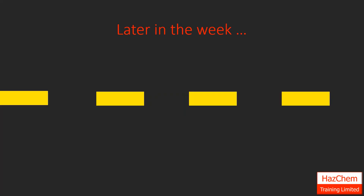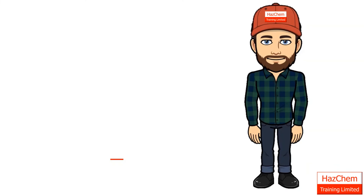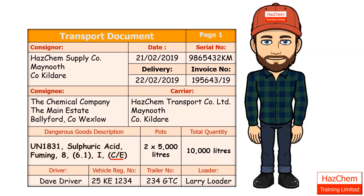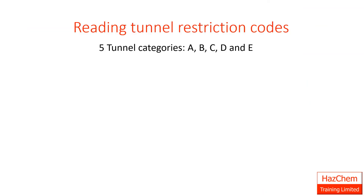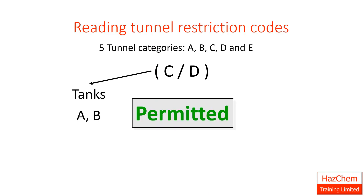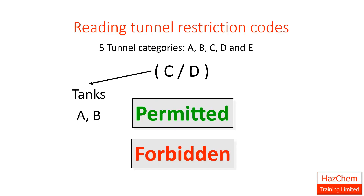Later in the week, Dave is pulling a tanker. He has the same substance on board, but this time the first letter applies. So he is permitted to use Category A and B, but forbidden from using Categories C, D and E. Bad news for Dave — he needs to find an alternative route.